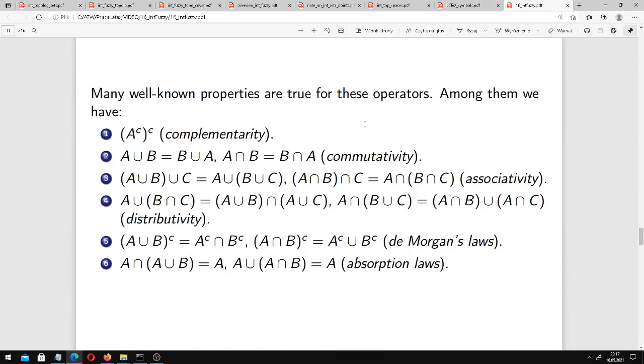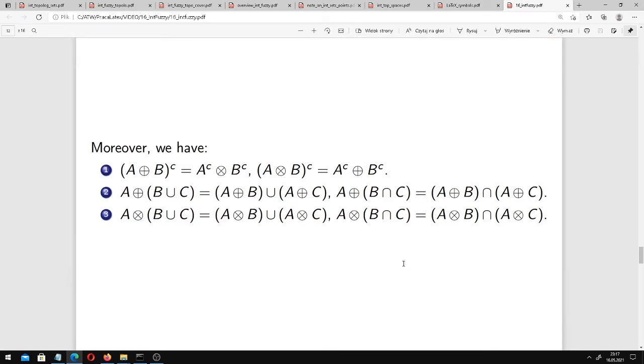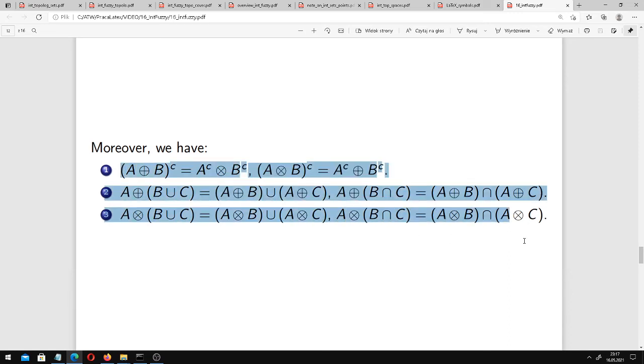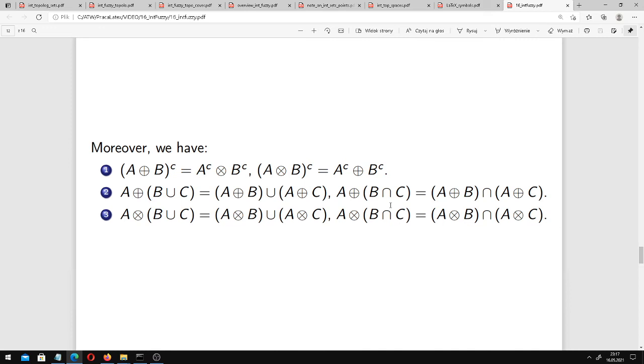Many well-known Boolean properties are true for these operators. Among them we have complementarity, commutativity of both operators, associativity, distributivity of union and intersection, De Morgan's laws, and absorption laws. Moreover, for addition and multiplication, we have these properties as well.